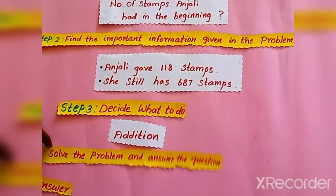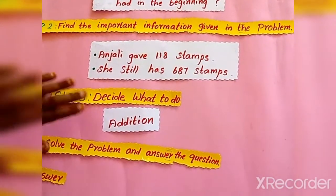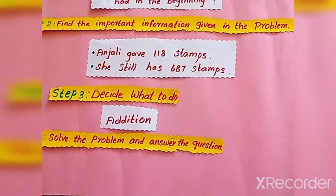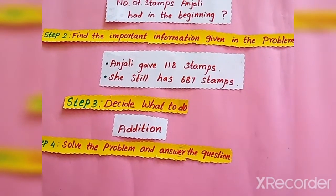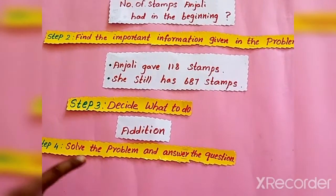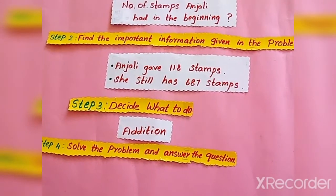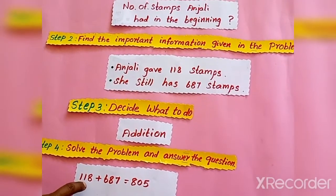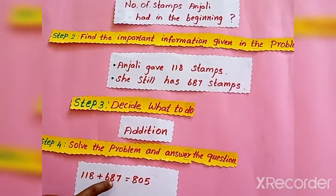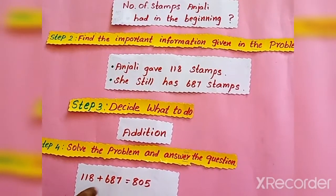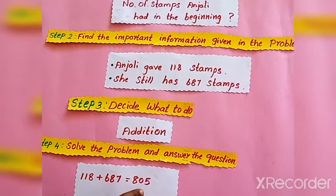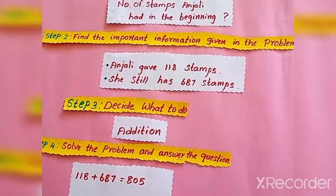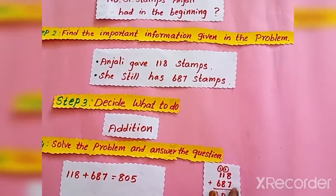In step 4 we have to solve the problem. We understood from step 3 that we have to add. So we add the 118 stamps she gave to her sister and the 687 stamps left with her. If we add both, we will get the number of stamps in the beginning. When we add that, we get 805 as the answer.